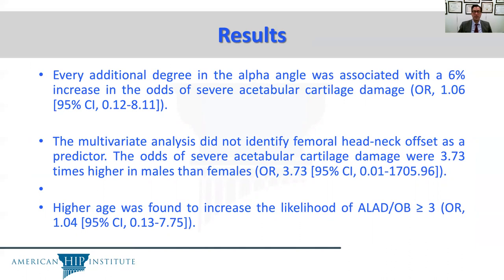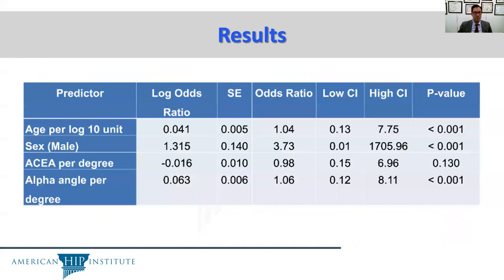The odds of severe acetabular cartilage damage were 3.73 times higher in males than females. Higher age was also found to increase the likelihood of higher grades of cartilage damage. Here we see the predictors and odds ratios: age per log 10 unit, sex, and alpha angle per degree all produced significant predictive p-values.